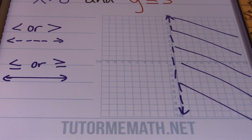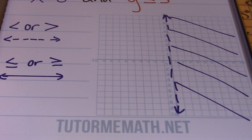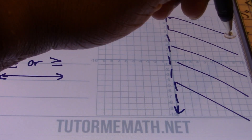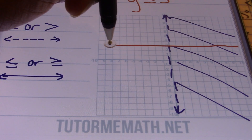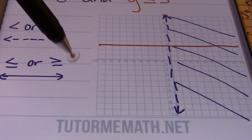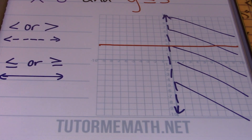The area to the right of this line is where I shade to find solutions greater than zero. But I need to keep in mind that this is an intersection, so my final answer will be an overlap of solutions from x is greater than zero and y is less than or equal to three. Speaking of y is less than or equal to three — anytime you have the format of y equals a number, you're dealing with a horizontal line. In this case, I have a horizontal line going through three, expressed with a solid line because it's less than or equal to.